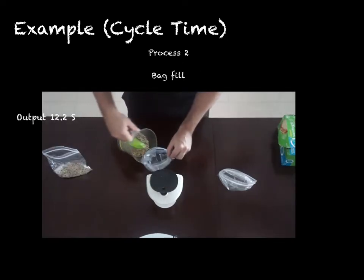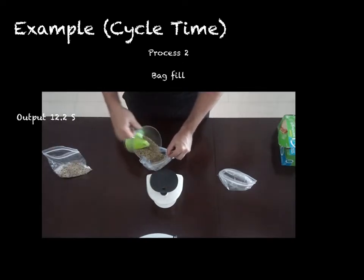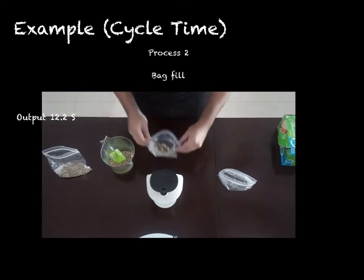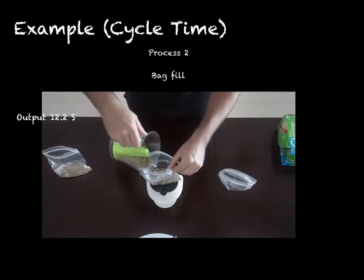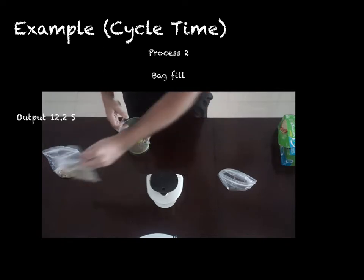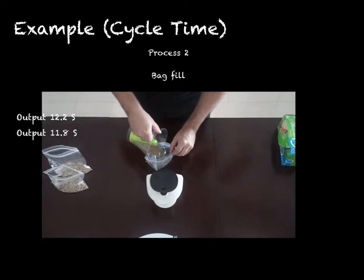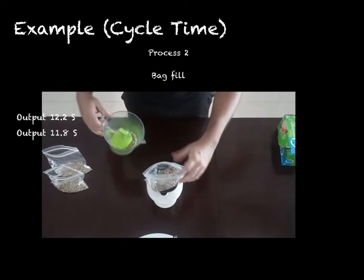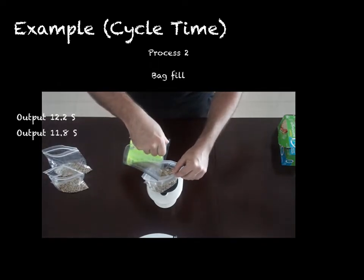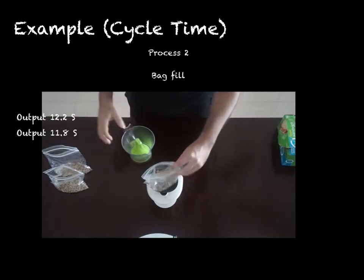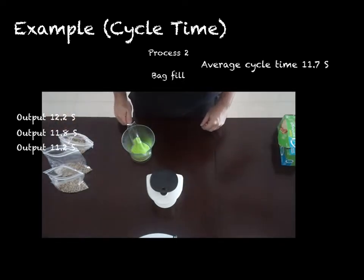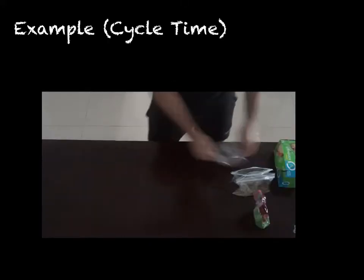Now let's look at process two. The average cycle time is 11.7 seconds. The average cycle time for the third and last process — the bag filling — is 5.8 seconds.